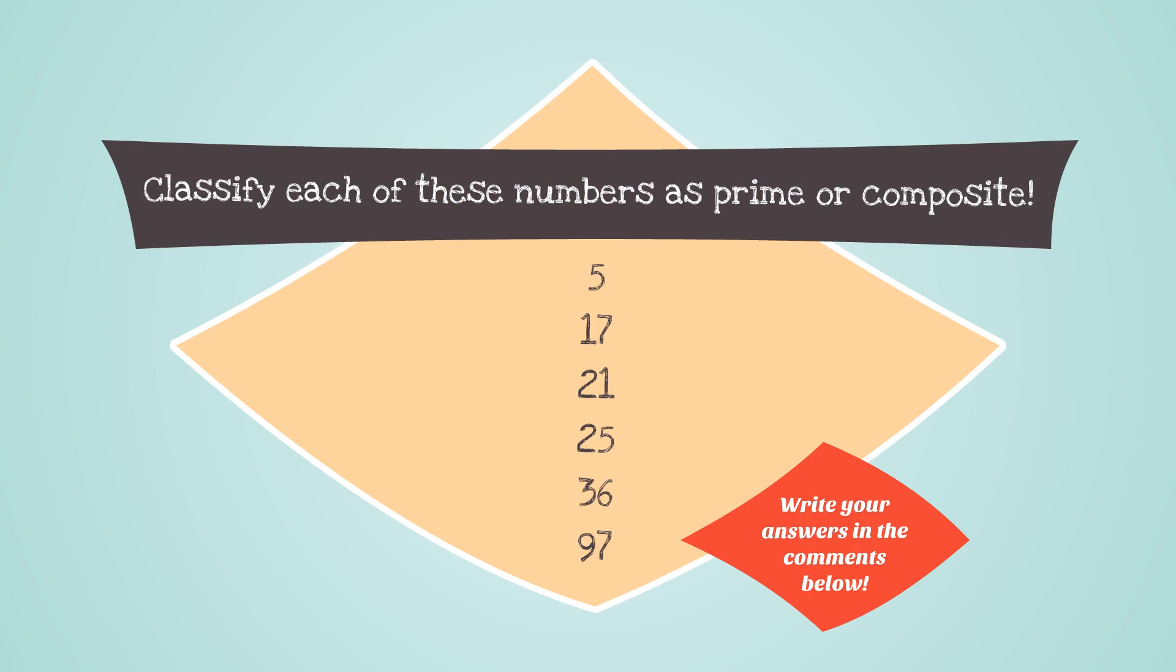Classify each of these numbers as prime or composite: 5, 17, 21, 25, 36, and 97. Don't forget to write your answers in the comments below to check if you were correct.